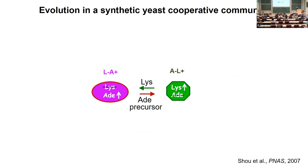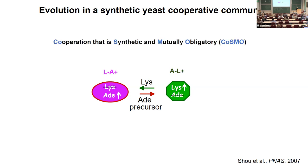With that, I want to get into the main topic: evolution in a synthetic yeast cooperative community. To replace A and B with specific metabolites — L minus A plus cannot make lysine, but pays a cost to overproduce adenine. And A minus L plus cannot make adenine and overproduces lysine. (Adenine here refers to an adenine precursor, but for simplicity I'll just call it adenine.) These overproduced metabolites are released into the medium, allowing the two to cooperate. We call this cooperation that is synthetic and mutually obligatory, or COSMO.